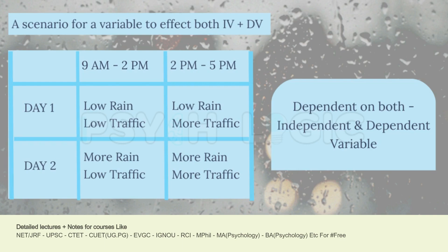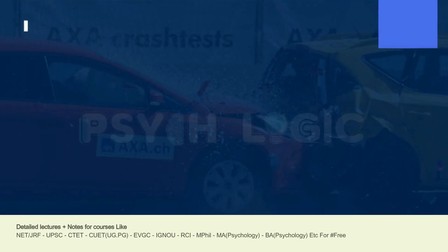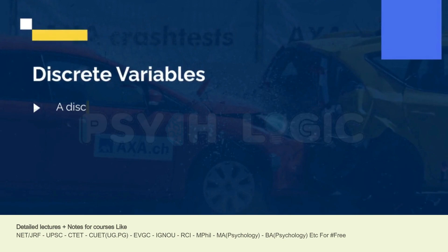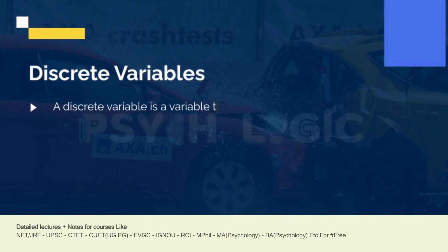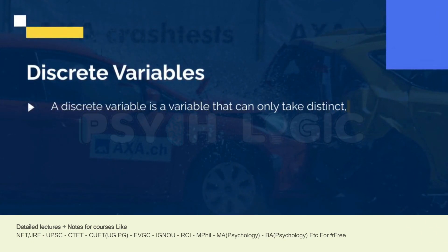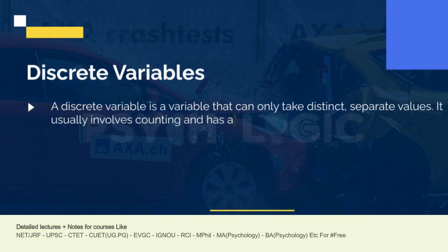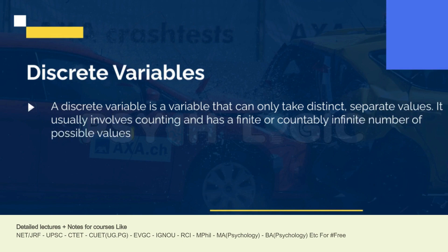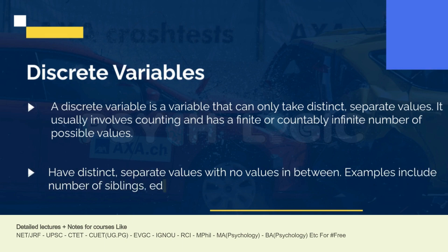Next comes the discrete variable. A discrete variable is a variable that can only take distinct or separate values. Discrete means divided or separate, so here discrete means you can only take a distinct digit. For example, the number of students in a class is a discrete variable. You cannot have a fraction of a number — 65 and a half students in a class is not possible. It can only be a whole number, making it discrete.